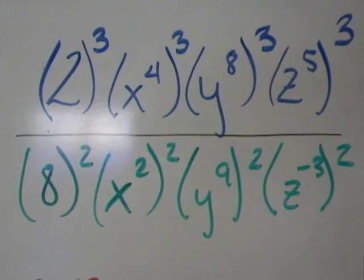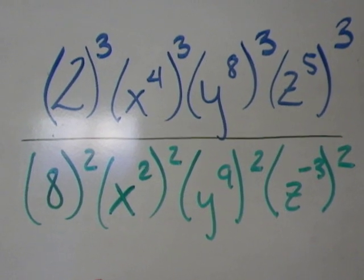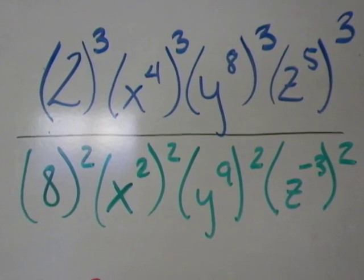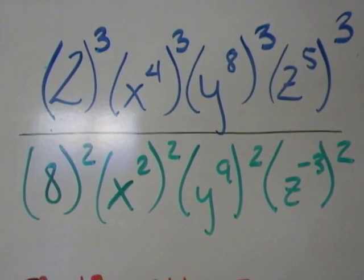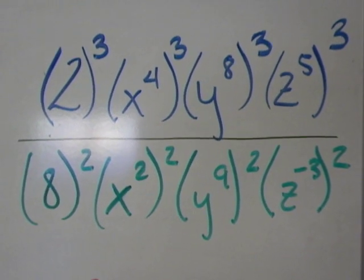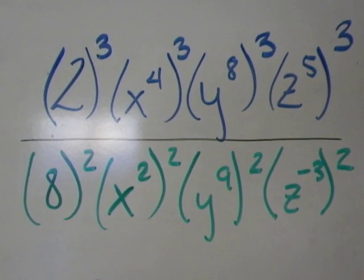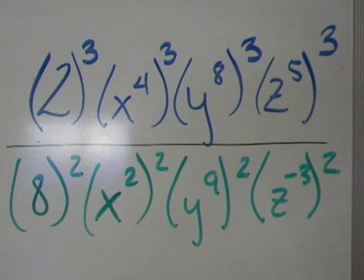2 cubed means what's 2 times 2 times 2, and 8 squared means what's 8 multiplied by 8. Remember, the rules are different with coefficients than they are from variables.